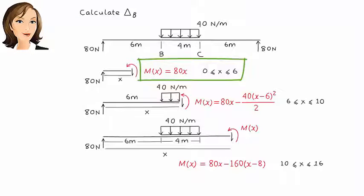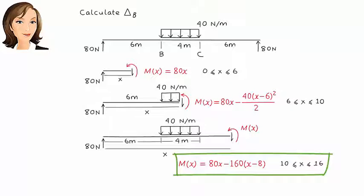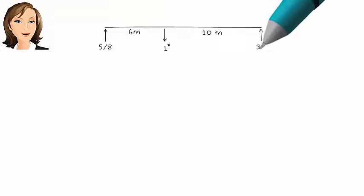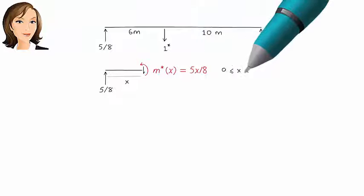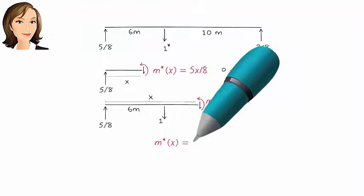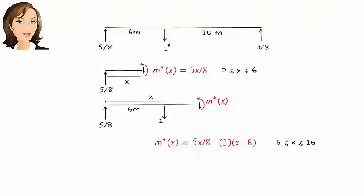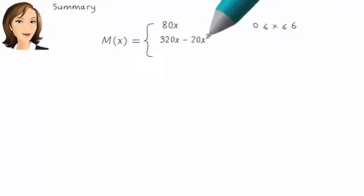One for the left segment of the beam, one for the middle segment, and one for the right segment. Next, we replace the applied load with a virtual vertical unit load placed at B and write the moment equation for the beam. There are two such equations: one for the left beam segment and one for the right beam segment. To calculate delta B, we need to integrate M times M star.